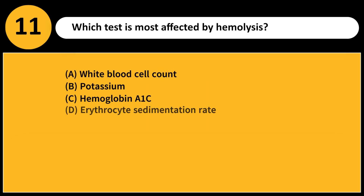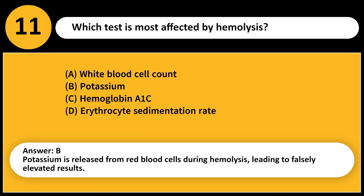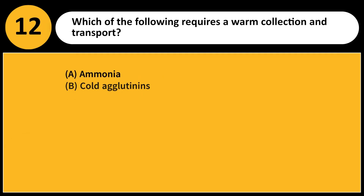Which test is most affected by hemolysis? Answer: B. Potassium is released from red blood cells during hemolysis, leading to falsely elevated results.